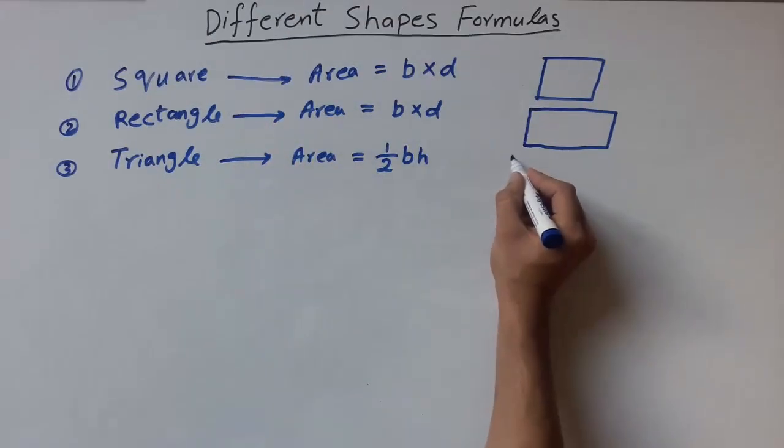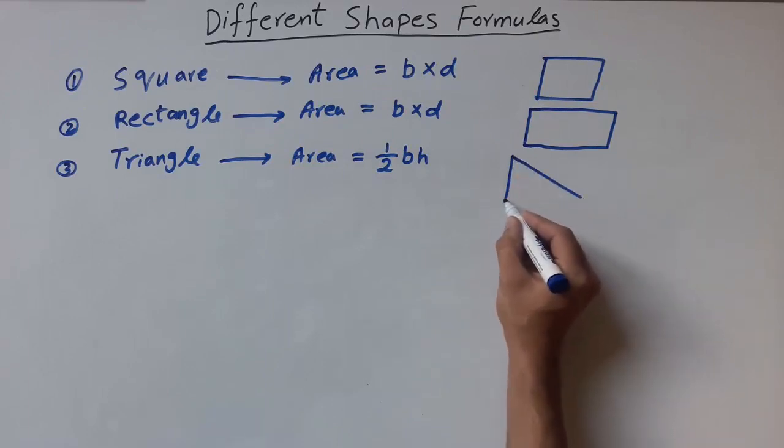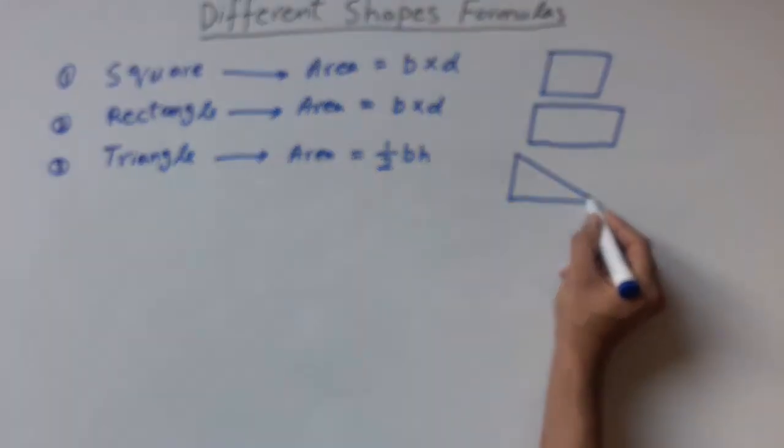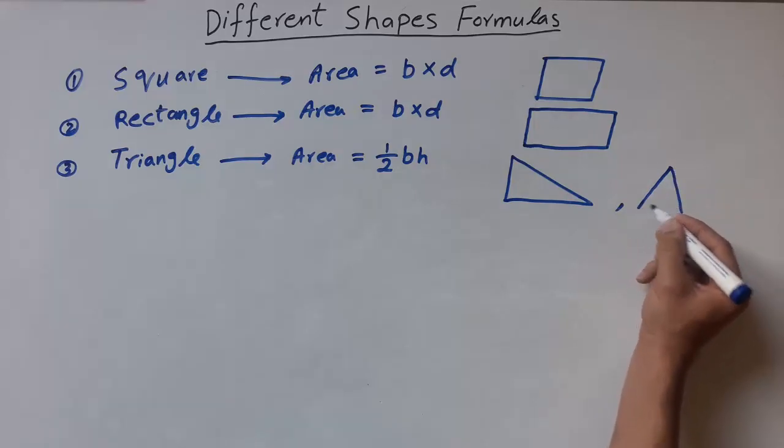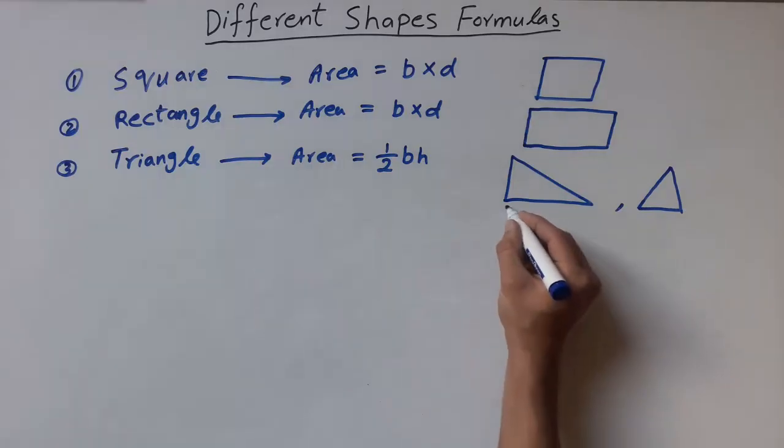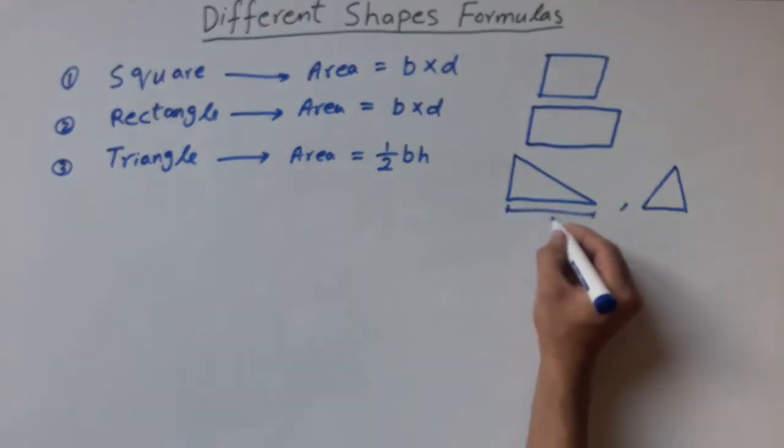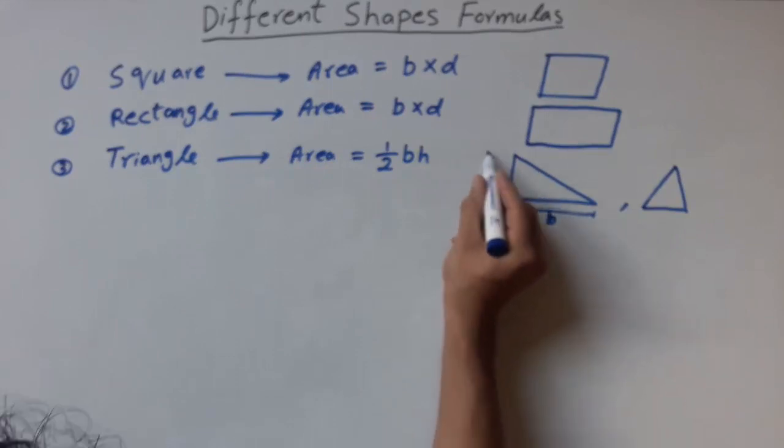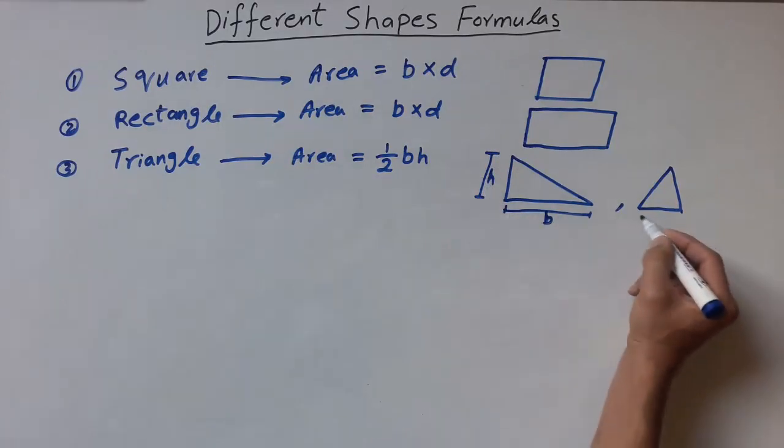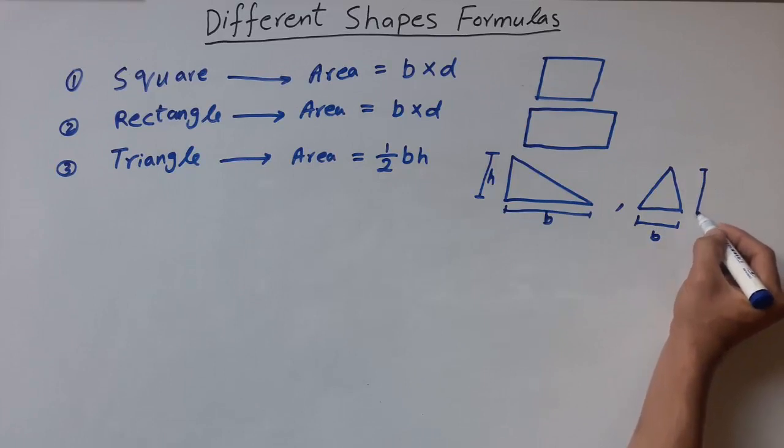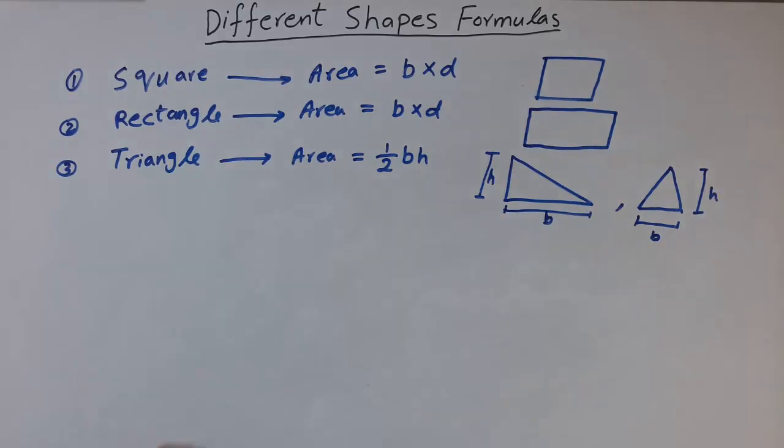You can have any triangle, you can also have this kind of triangle. The area would be same for both of them. This is base and this is height. For this one, we have base and this is height.